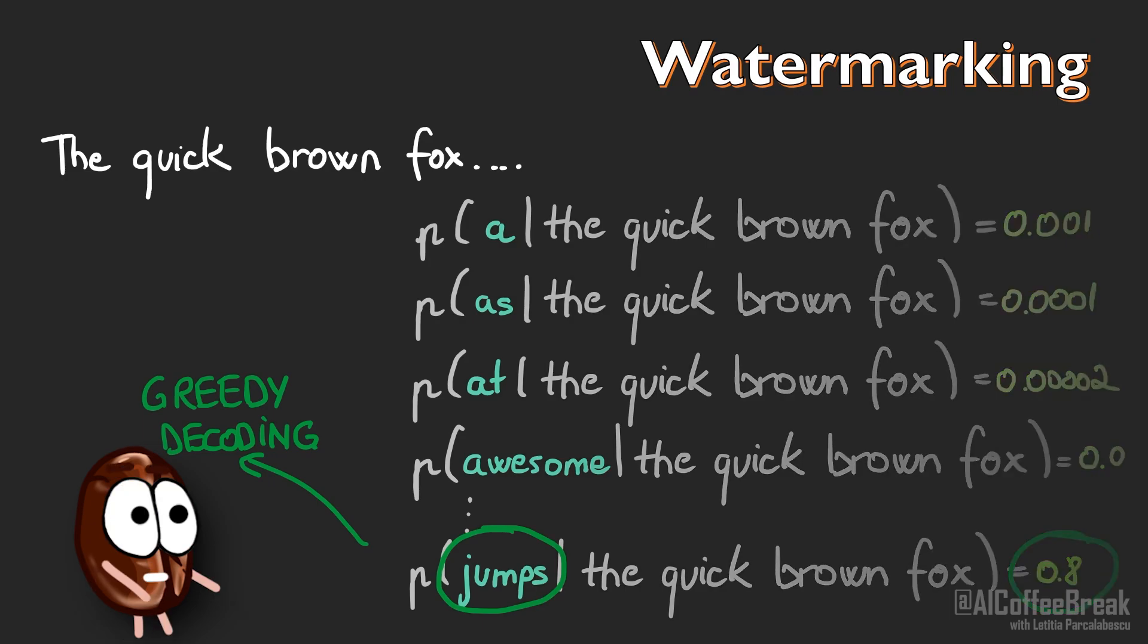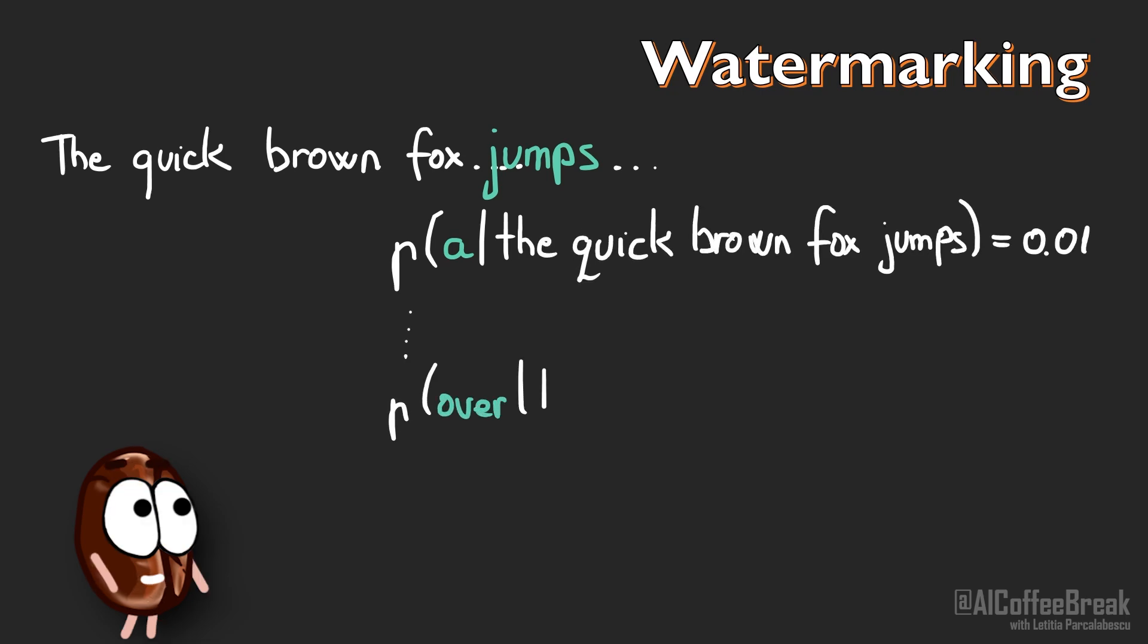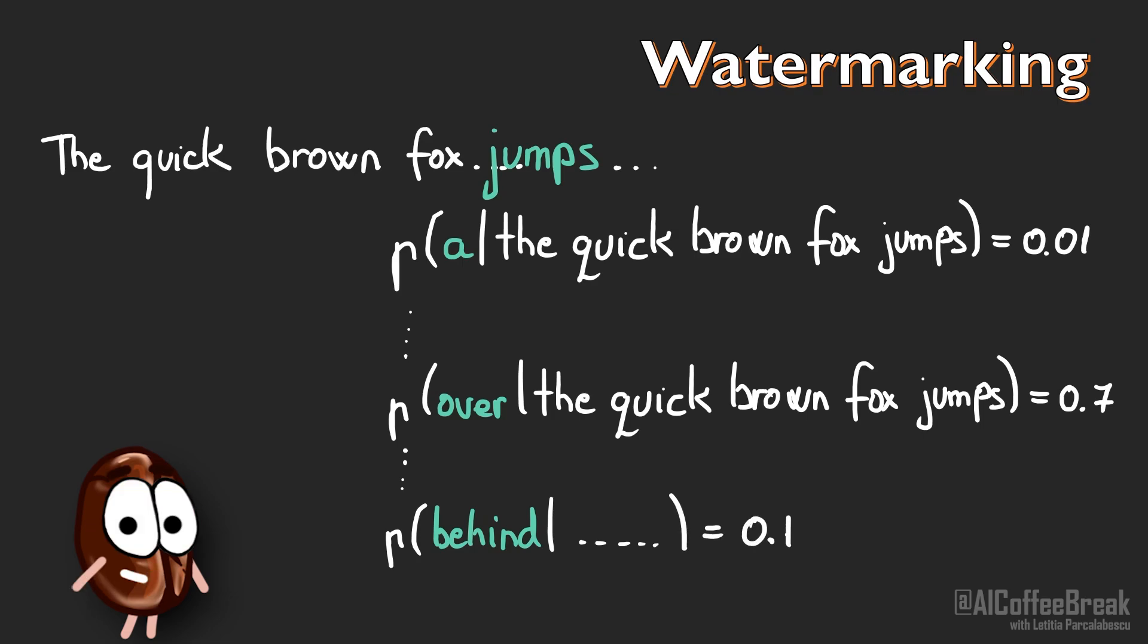Let's suppose we have taken the next most probable word, then at the next generation step with the language model we would take the input text, the last prediction, and based on this we compute again probability distributions for the next words. With greedy decoding we would again take the next most probable word and so on, but this has been shown to produce very repetitive and unsurprising text. And we humans do not like that. We like to be informed, so we're also a little bit surprised by text.